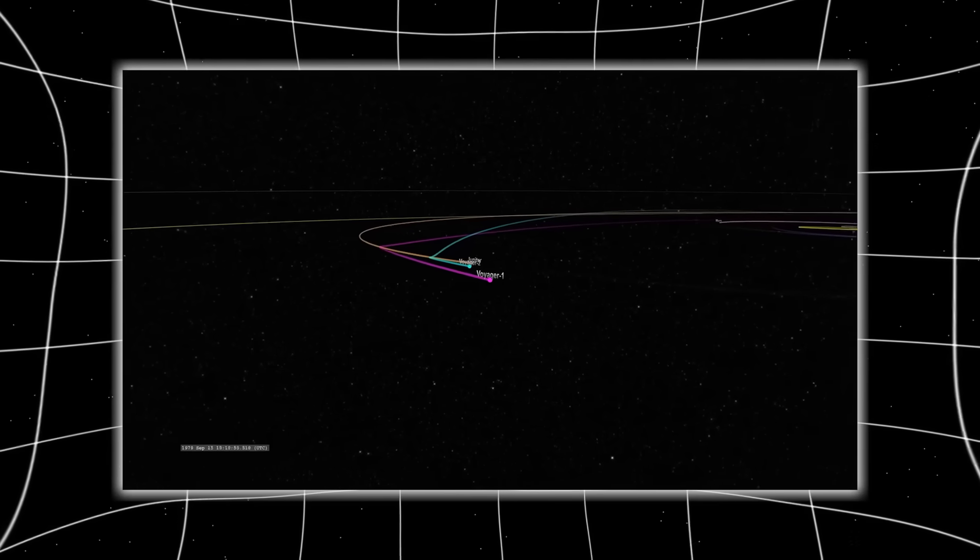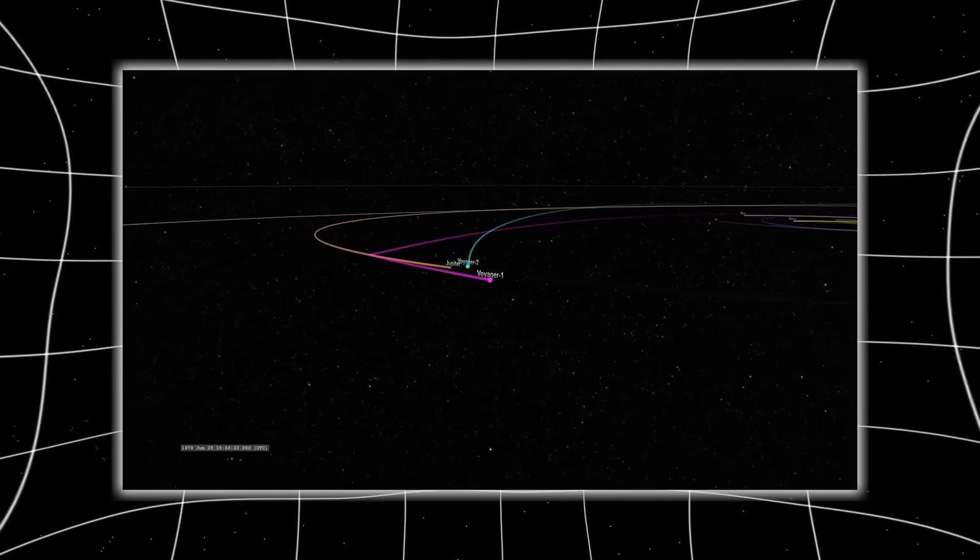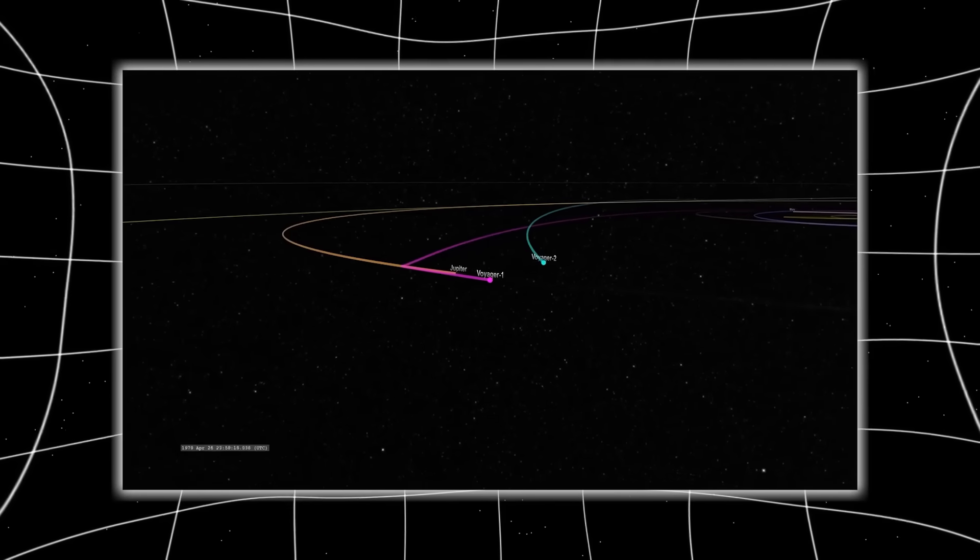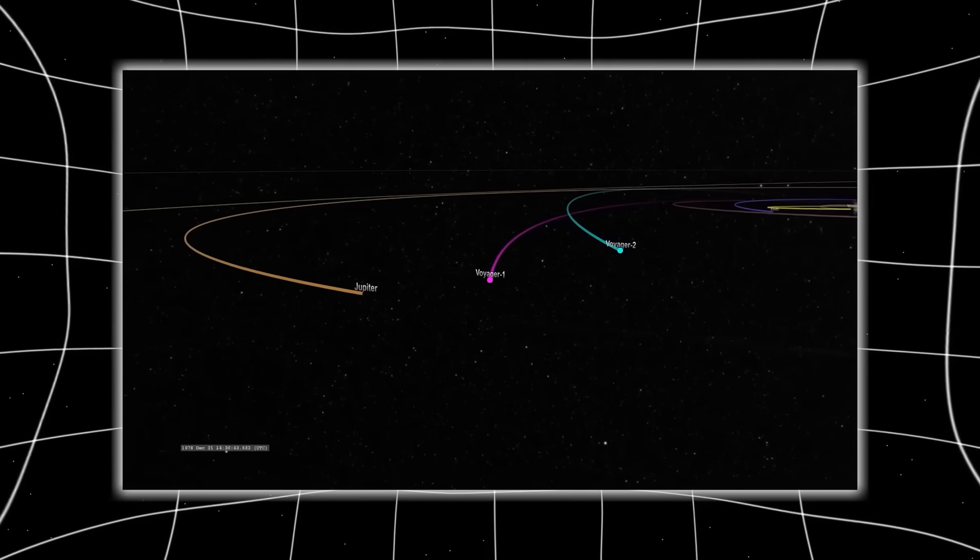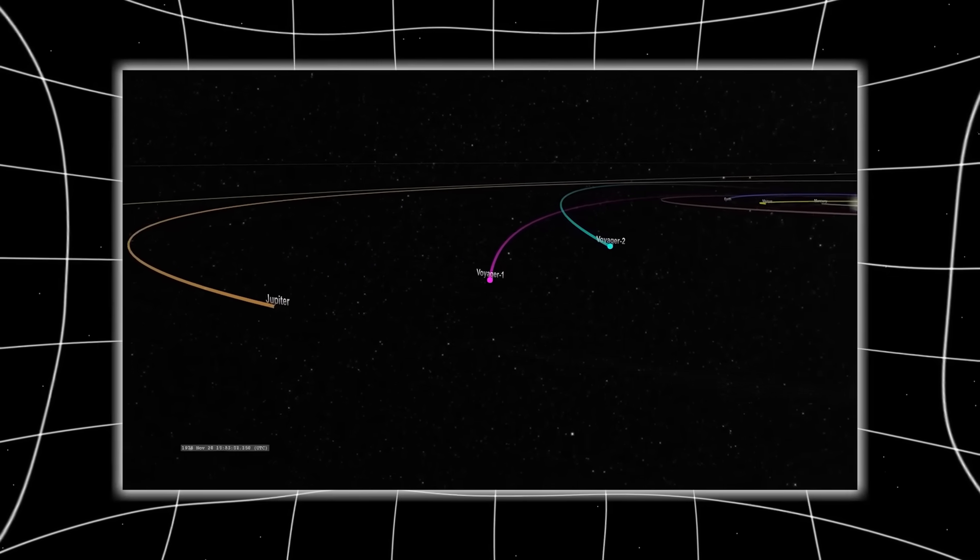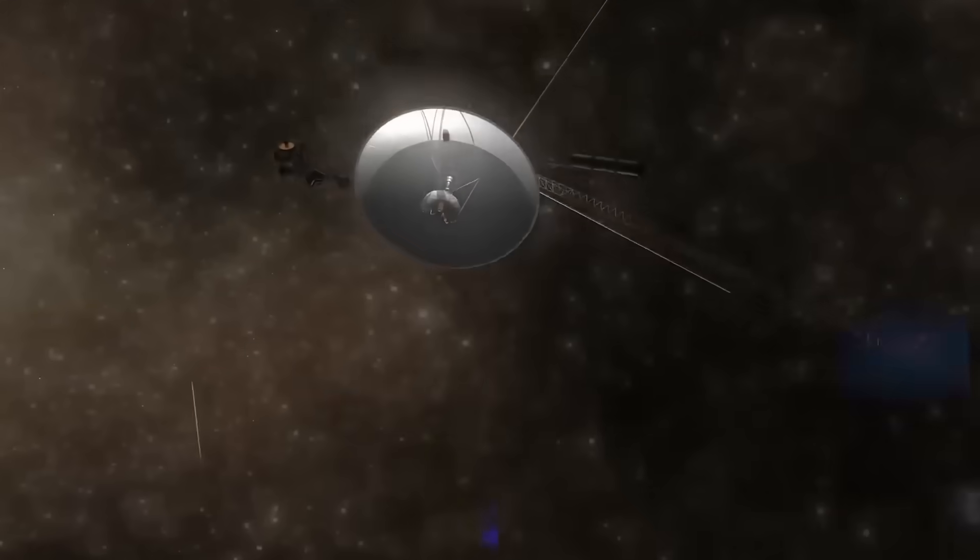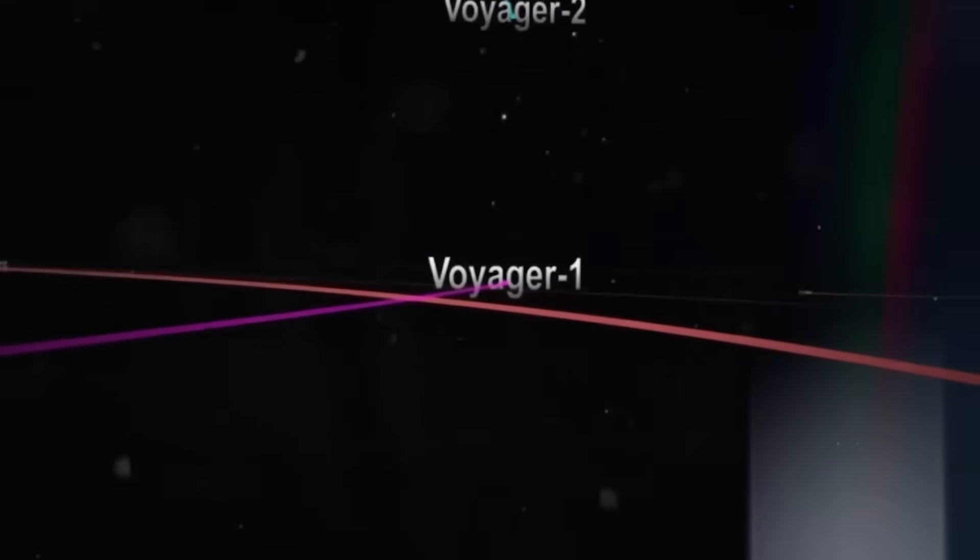But here's where things grew stranger. The data included universal constants measured with a precision Voyager's sensors couldn't achieve. The gravitational constant, the fine structure constant, cosmic expansion rates. All correct. All too precise. It was as if the sender had used Voyager as a carrier, embedding a payload of advanced information into its normal signal.